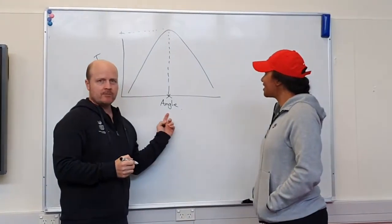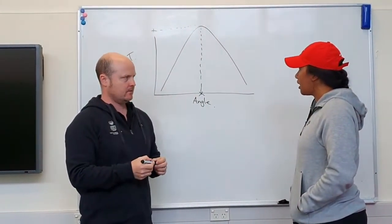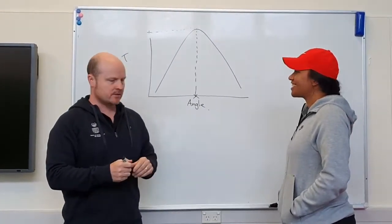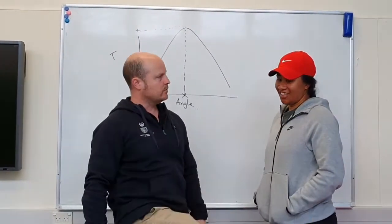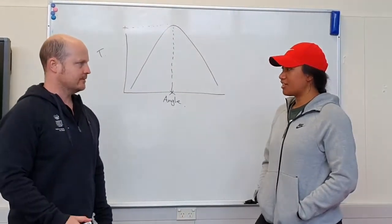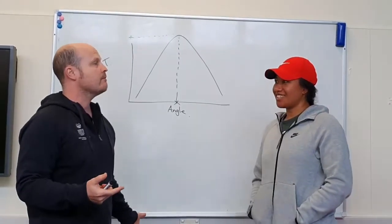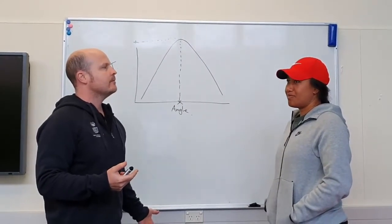Angle of peak torque is really important. Why? Because when I'm sprinting, that's where you get your greatest strength to stop me from getting injured.